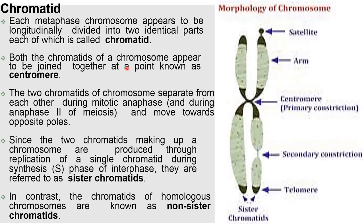Each metaphase chromosome appears to be longitudinally divided into two identical parts, each of which is called a chromatid. Both chromatids of the chromosome appear to be joined together at a point known as the centromere. The two chromatids of the chromosome separate from each other during mitotic anaphase — in the case of meiosis it will be anaphase two — and move towards the opposite pole.